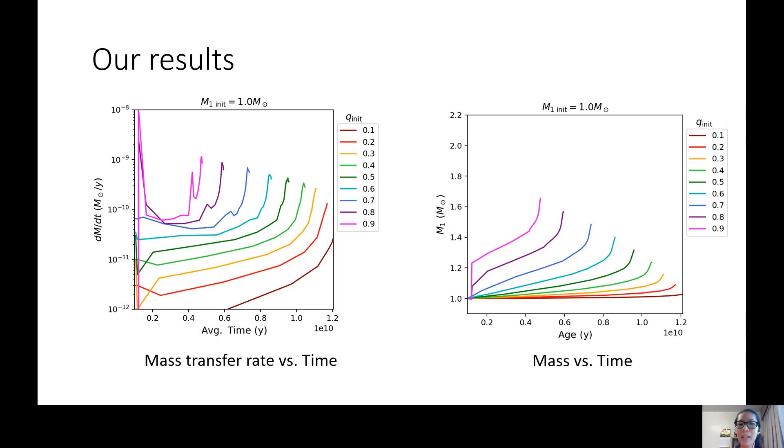These are the graphs with M dot, which is mass transfer rate versus time on the left, and mass versus time on the right. If you look at the graph on the left, for a long time, the M dot is fairly constant. That is when the star is burning hydrogen in its core.